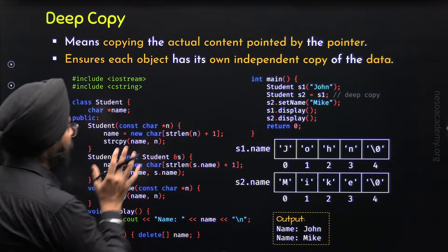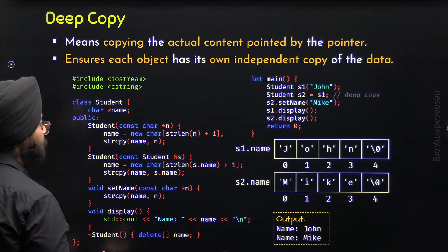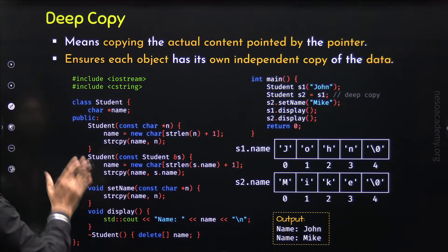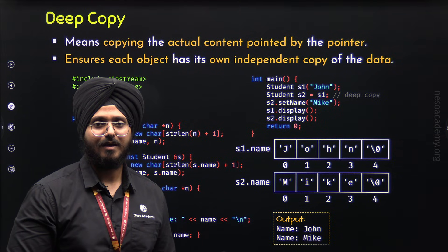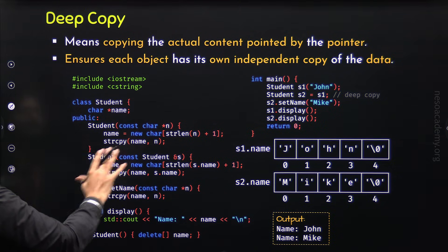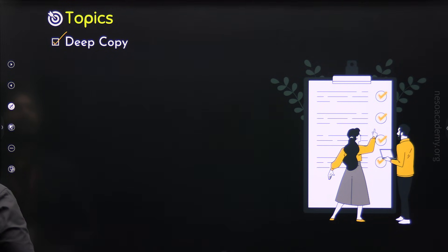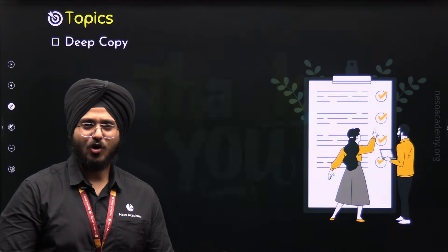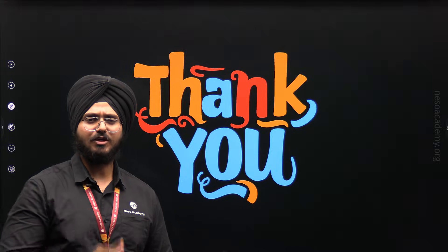So it is advisable that whenever you create a copy of some existing object and create a new object based on that copy, always follow the deep copy concept and do not follow shallow copy. I hope this is completely clear to you. With this, we have understood deep copy properly and we are done with this lecture. Thank you for watching this lecture. I will see you in the next one.